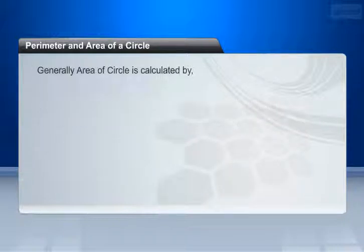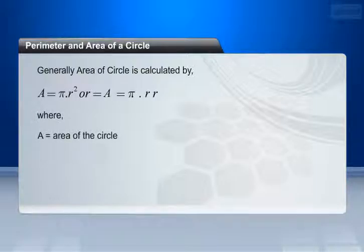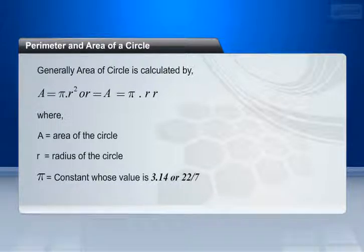Generally area of circle is calculated by the formula: A = πr² or A = π·r·r. Where A equals area of the circle, R equals radius of the circle, π equals constant whose value is 3.14 or 22/7.